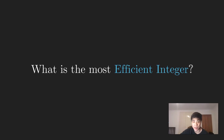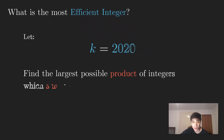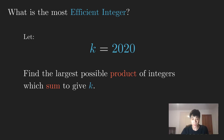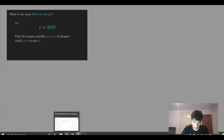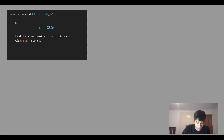Here's an interesting problem about efficient integers. The problem states: select k equal to 2020, and it asks to find the largest possible product of integers which sum to give k. Let's test some numbers on a smaller example — instead of 2020, let's try something small like 12 and see how the integers behave.